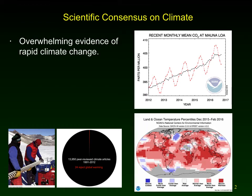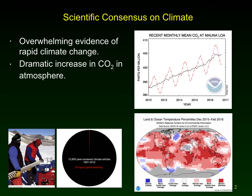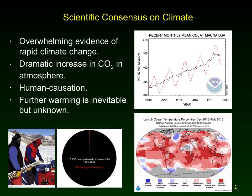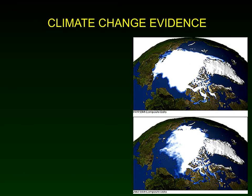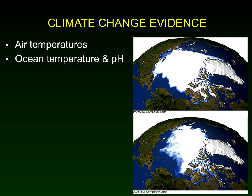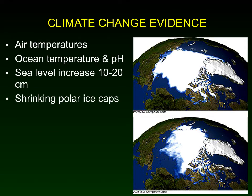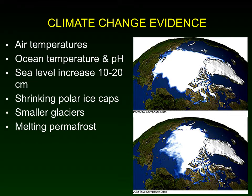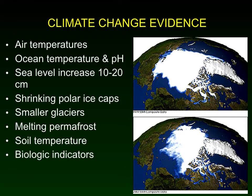I want to remind you of the scientific consensus on climate. There is overwhelming evidence of rapid climate change. A dramatic increase in CO2 is the primary cause, and we know this is caused by fossil fuel burning. Further warming is inevitable, though the exact amount has some uncertainty. The evidence includes changes in air temperatures, ocean temperature and pH, sea level, shrinking polar ice caps, shrinking glaciers, melting permafrost, changes in soil temperature, and biological indicators. This is science — multiple pieces of evidence all pointing in the same direction.